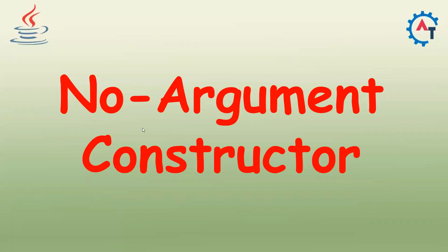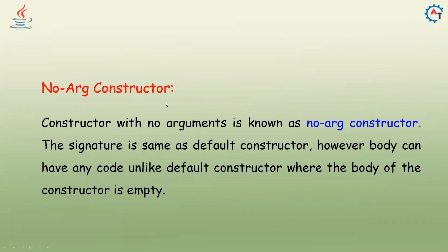In this video we will see the no-argument constructor in Java. This is one of the types of constructors. We already saw the definition and theory in our video called 'Constructors in Java'. A constructor with no arguments is known as a no-argument constructor. The signature is the same as a default constructor, however the body can have any code, unlike the default constructor where the body is empty.